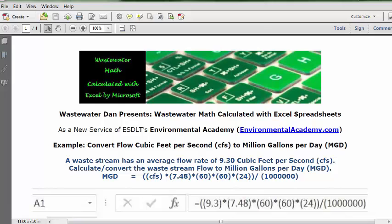and putting in all the basic elements for the calculation. We'll start out with CFS (cubic feet per second), multiply it by 7.48 to get gallons per second. Multiply by 60 to get gallons per minute, multiply by 60 again to get gallons per hour, multiply by 24 to get gallons per day, and divide by a million to give us million gallons per day (MGD).